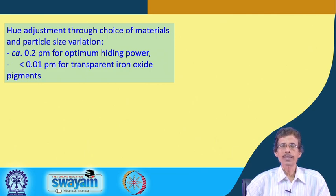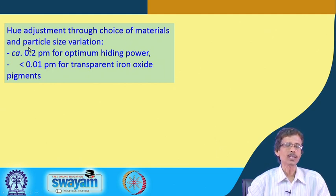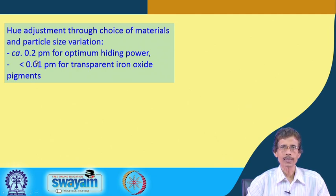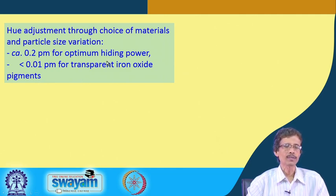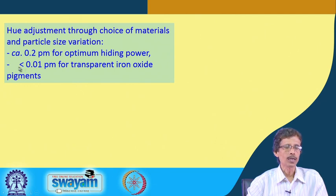Mixing red, blue, and green allows different hue variations. Hue adjustment is achieved by mixing materials of a particular particle size. Particles of 0.2 micrometer size are used in most cases. Nanoparticle-sized particles serve special purposes, while particles in the 0.01 micrometer range are transparent for iron oxide pigments.